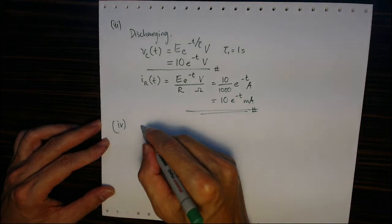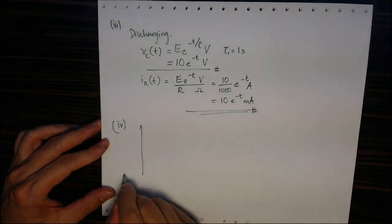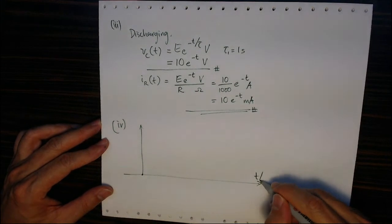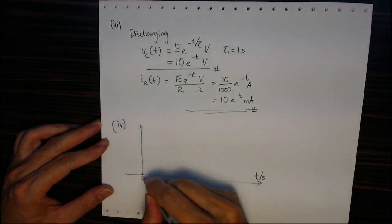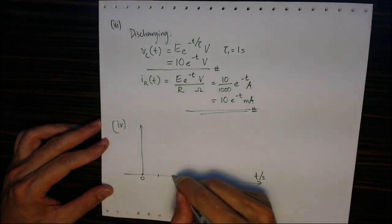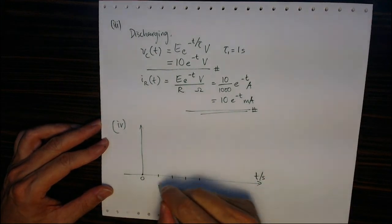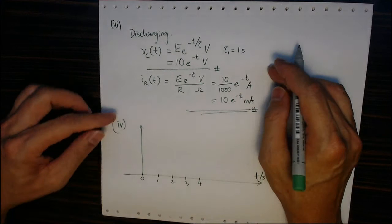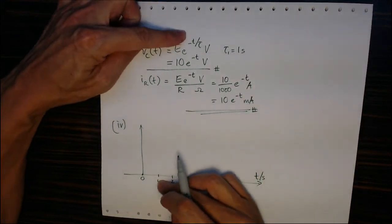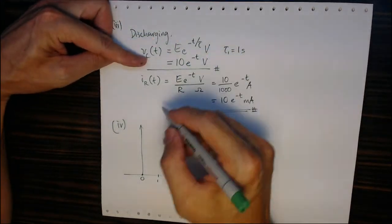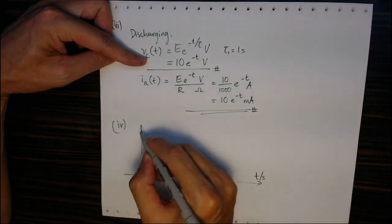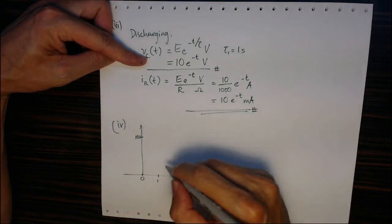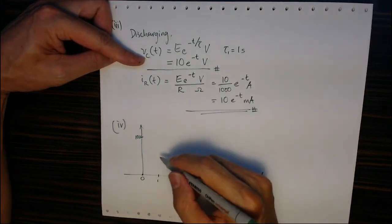Now if we draw this waveform, the horizontal axis is time t in seconds: 0, 1, 2, 3. If we substitute these time values, at time 0, the voltage starts at 10 volts.